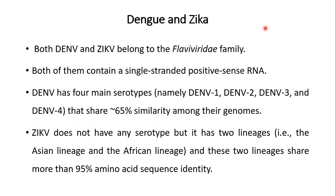As we all know that both Dengue virus and Zika virus belong to the Flaviviridae family and both of them contain a single-stranded positive-sense RNA. Dengue virus has four main serotypes, namely DENV-1, 2, 3 and 4, and they share about 65% similarity among their genomes.